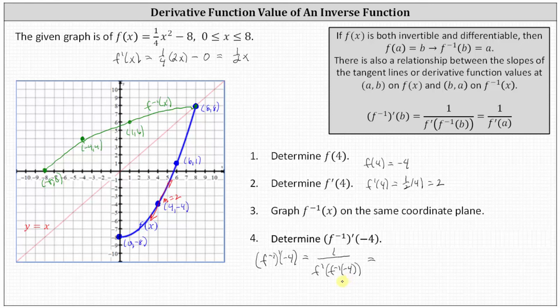Applying this for number four: f inverse prime of negative 4 equals 1 divided by f prime of f inverse of negative 4. We know f inverse of negative 4 equals positive 4 — the graph of f inverse of x contains the point negative 4 comma 4, and from number one, f of 4 equals negative 4 implies f inverse of negative 4 equals positive 4. This gives us 1 divided by f prime of 4. We found f prime of 4 in number two as positive 2, which is the slope of the tangent line to f of x at the point 4 comma negative 4. Therefore, f inverse prime of negative 4 equals one-half.